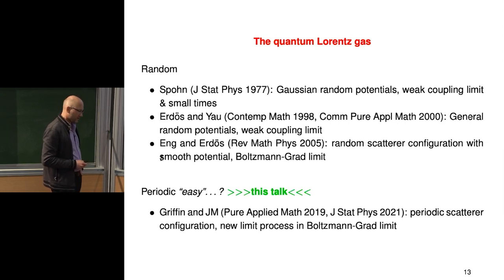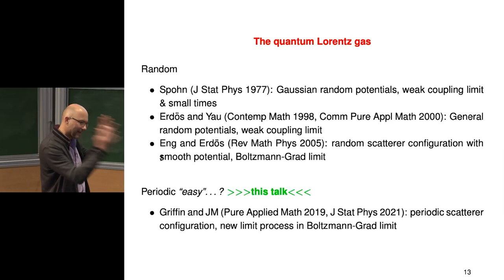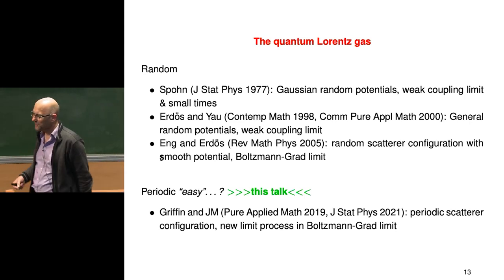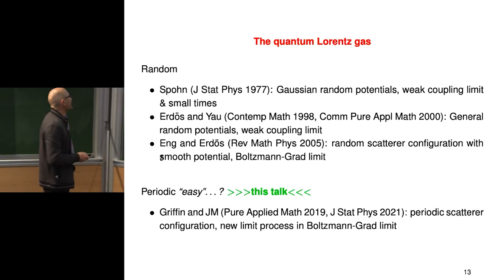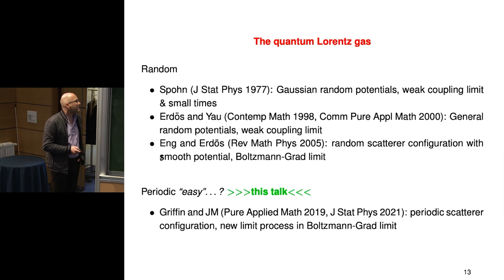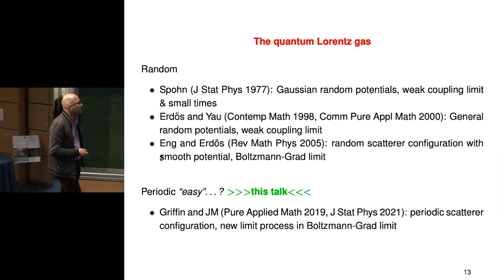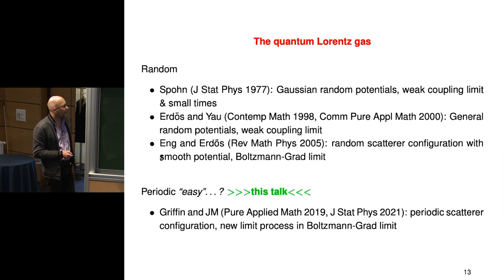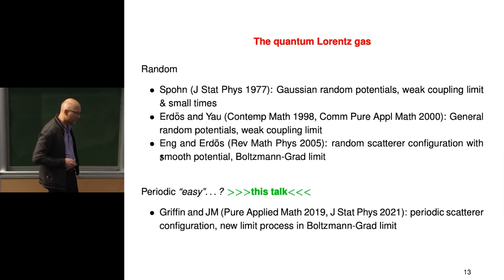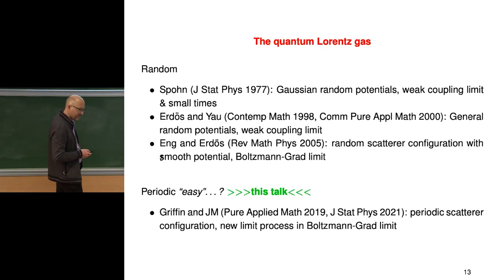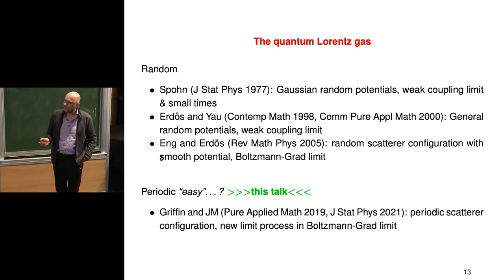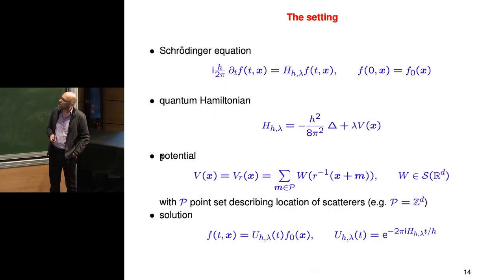I think there's a slight paradox: you read the literature and the statement is the classical case is hard, the quantum case is easy — but that's not so. I hope when you leave this lecture I'll have convinced you; otherwise, come see me in the coffee break. In particular, I'll talk about papers that came out recently with Jory Griffin, a former student of mine now at the University of Oklahoma. What I want to impress on you is that we see a new limit process in this scaling. Precisely the same scaling used by Eng and Erdős — the periodic case produces something very interesting.